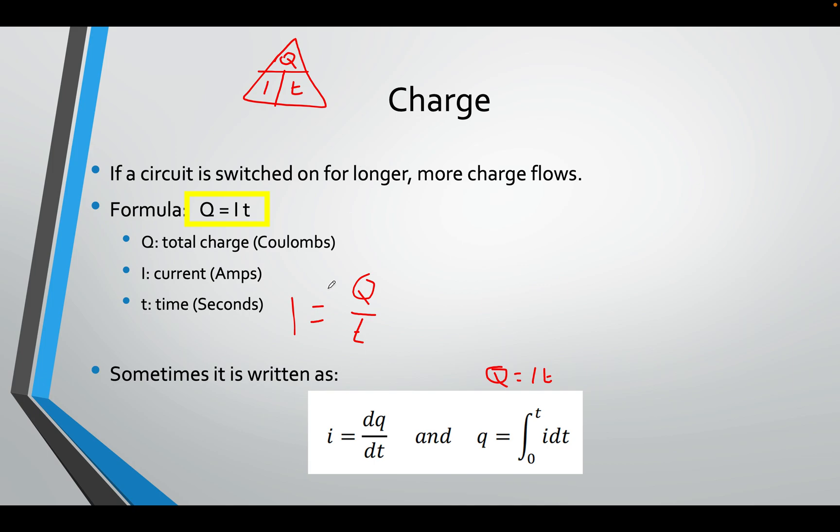For grade 12, you need to see it written as this sometimes, dQ over dT. If you remember, d just means small, a small Q, a small charge over a small amount of time.